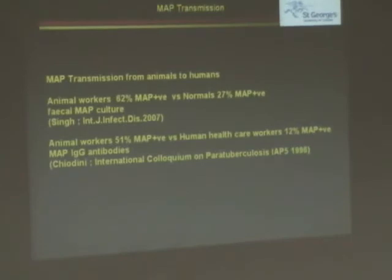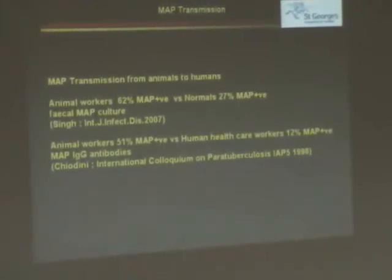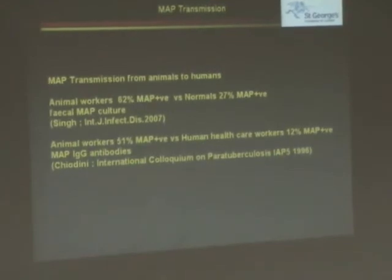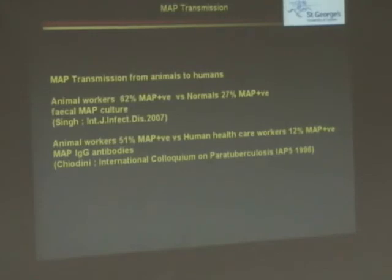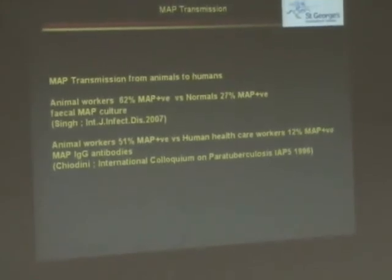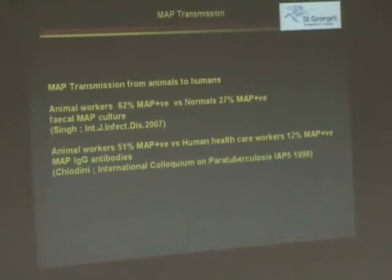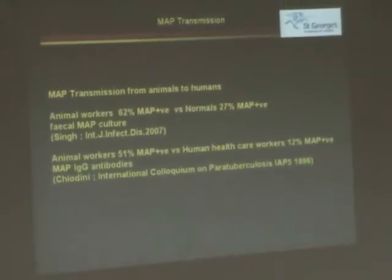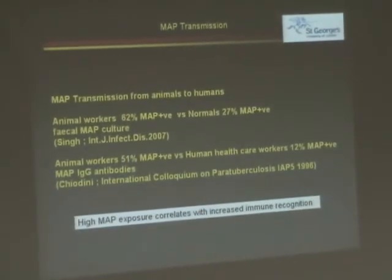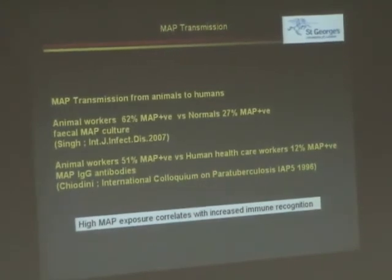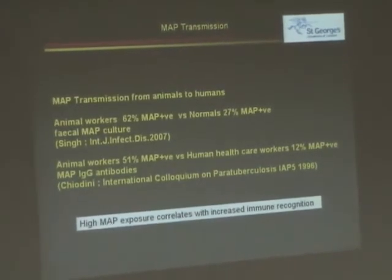If we look at Rod Chiodini's work — this is long-term data from the 1996 IAP — we still have evidence of animal workers. He doesn't call them normals, he calls them human healthcare workers. You have a significant number of animal workers over the top, with healthy normals actually producing antibodies. So what does this mean? It means that normals are actually seeing paratuberculosis. This is very encouraging, specifically if you want to use a vaccine — vaccines will work if we can actually make the immune system see paratuberculosis. A high MAP exposure correlates with increased immune recognition.